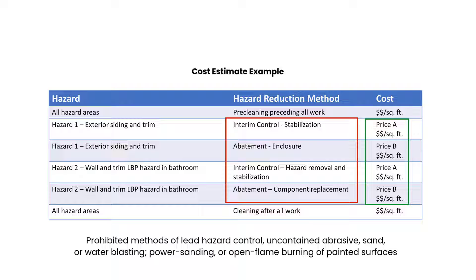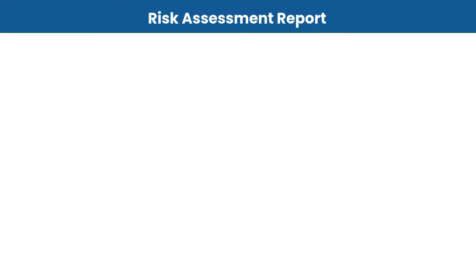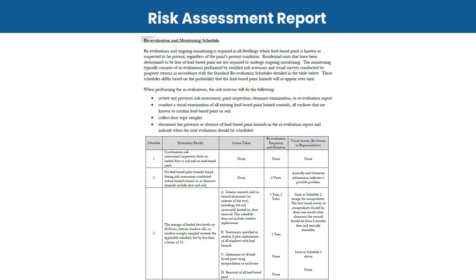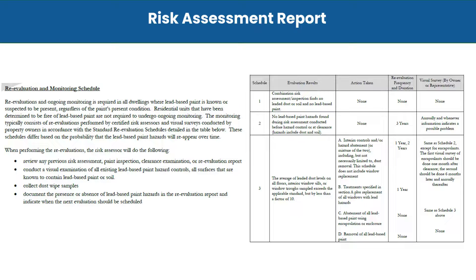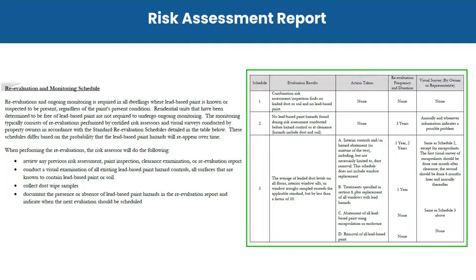The risk assessor must also emphasize the danger of using prohibited methods of lead hazard control, such as uncontained abrasive sand or water blasting, power sanding, or open flame burning of painted surfaces. The report also provides a re-evaluation recommendation for at least every two years for HUD-assisted properties when required. If no lead hazards are identified but no lead-based paint inspection has been completed, the risk assessment report should recommend to the owner that painted surfaces found to have lead-based paint and any untested painted surfaces be treated as though they contain lead.